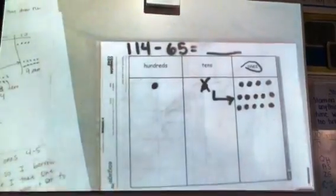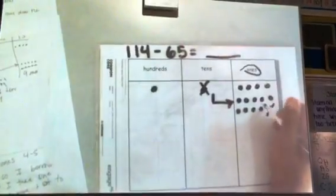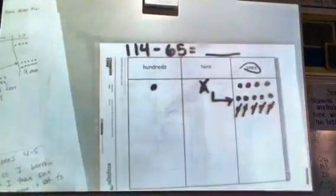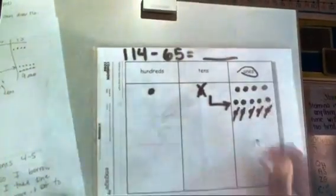Now I have 14 ones, so now I can take 14 minus five. One, two, three, four, five, six, seven, eight, nine is left over.